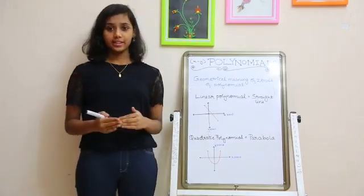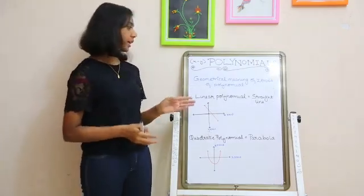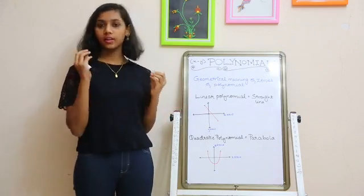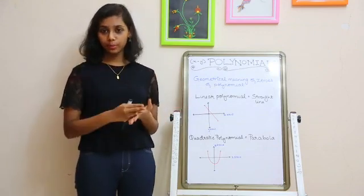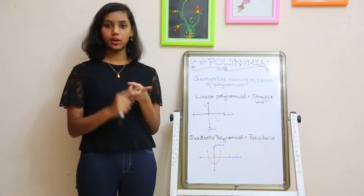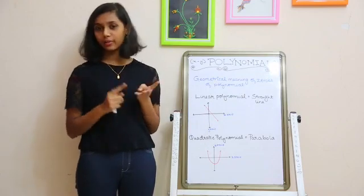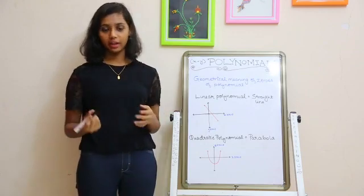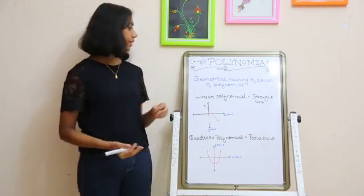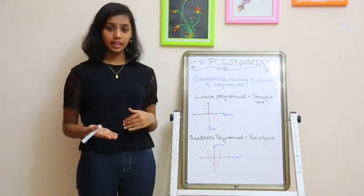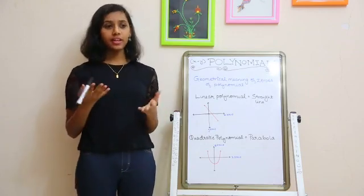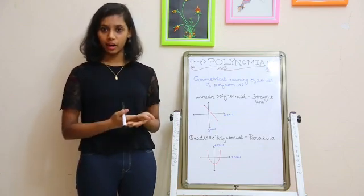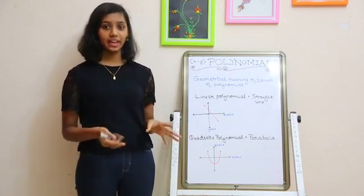Now the next topic is the geometrical meaning of the zeros of a polynomial. We learned what a polynomial is — its variables, constants, standard form, degree, types, and how to find the value. Now the question is: can we represent a polynomial on a graph? The answer is yes, we can.